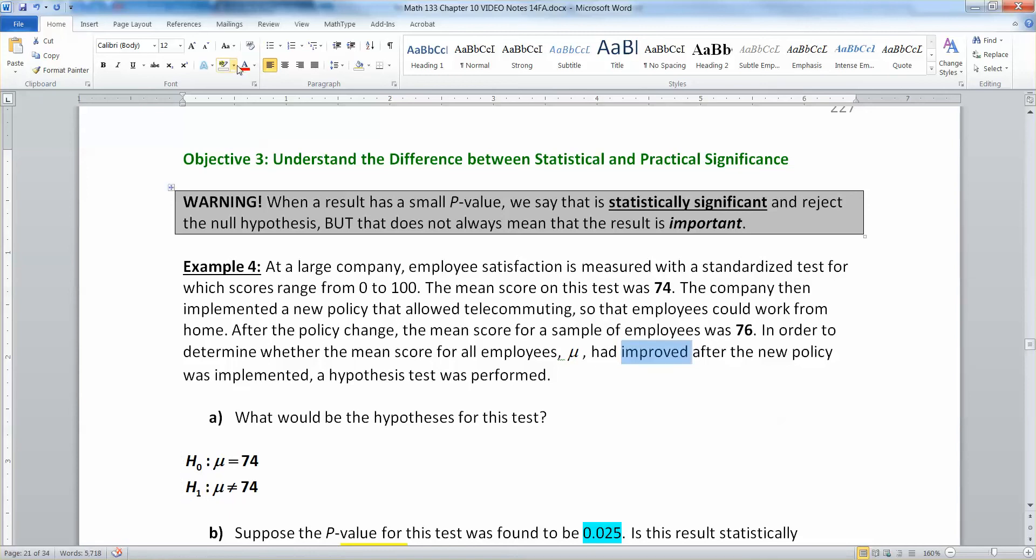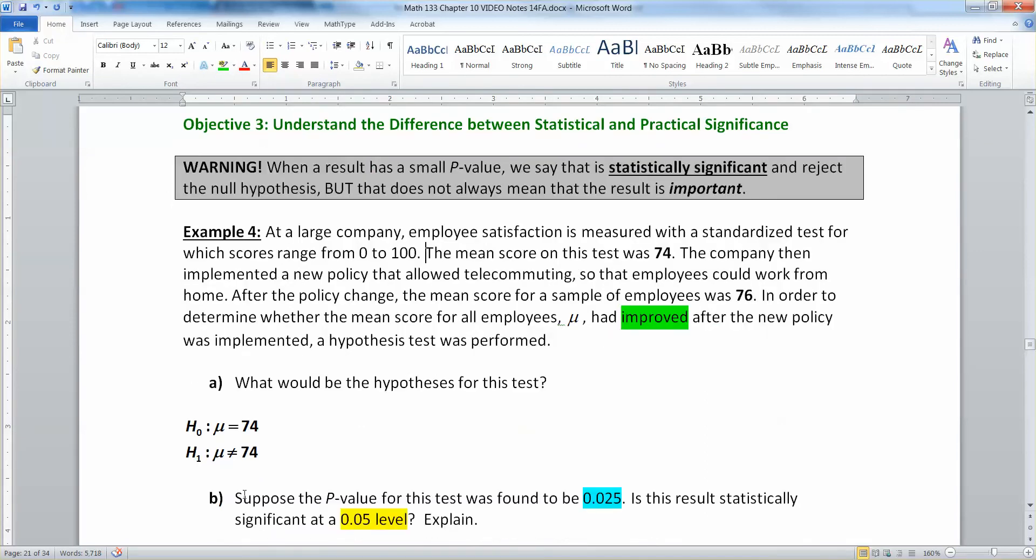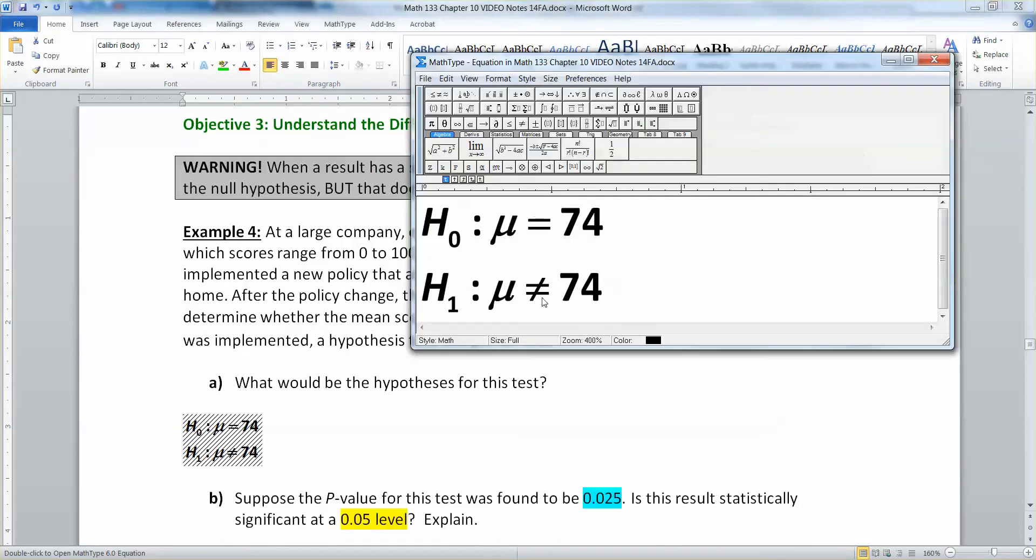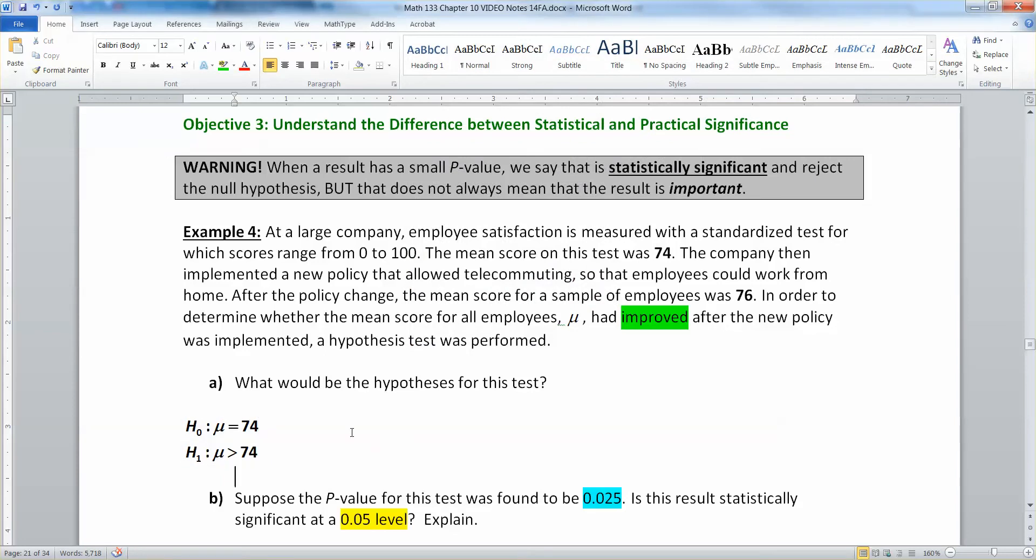So that word improvement, that's a big idea. So we need to think about that. So improved means our hypotheses are going to be H₀: μ = 74, what it used to be, and Hₐ: μ > 74. So we want to know, have we gone up in employee satisfaction?